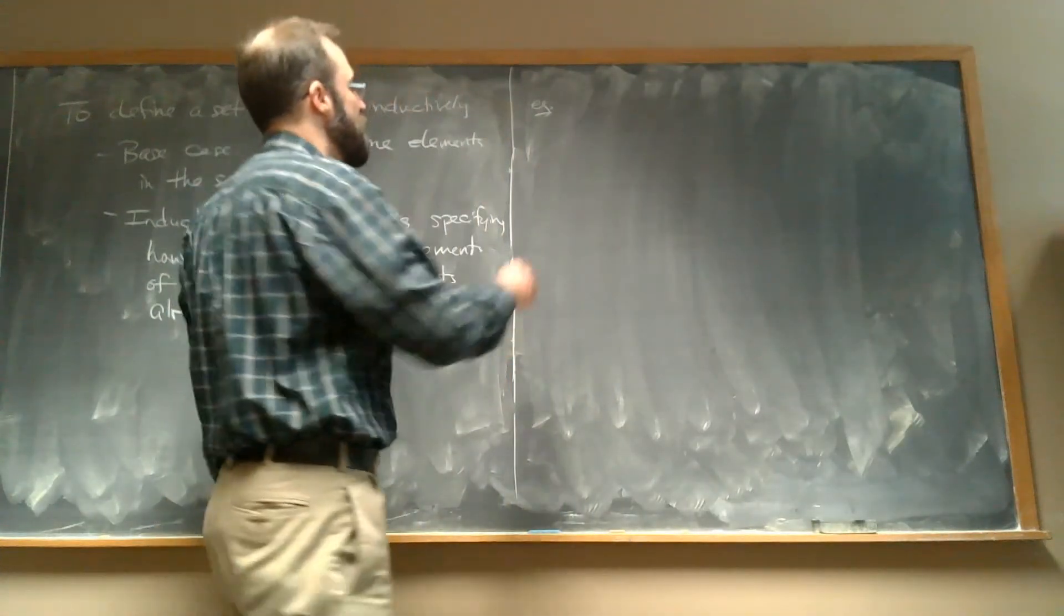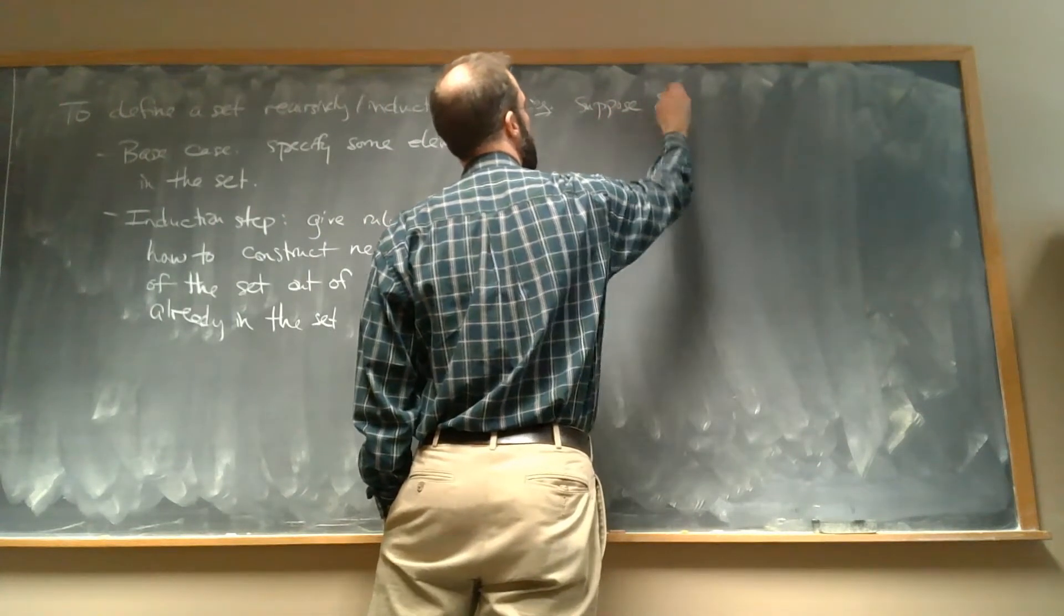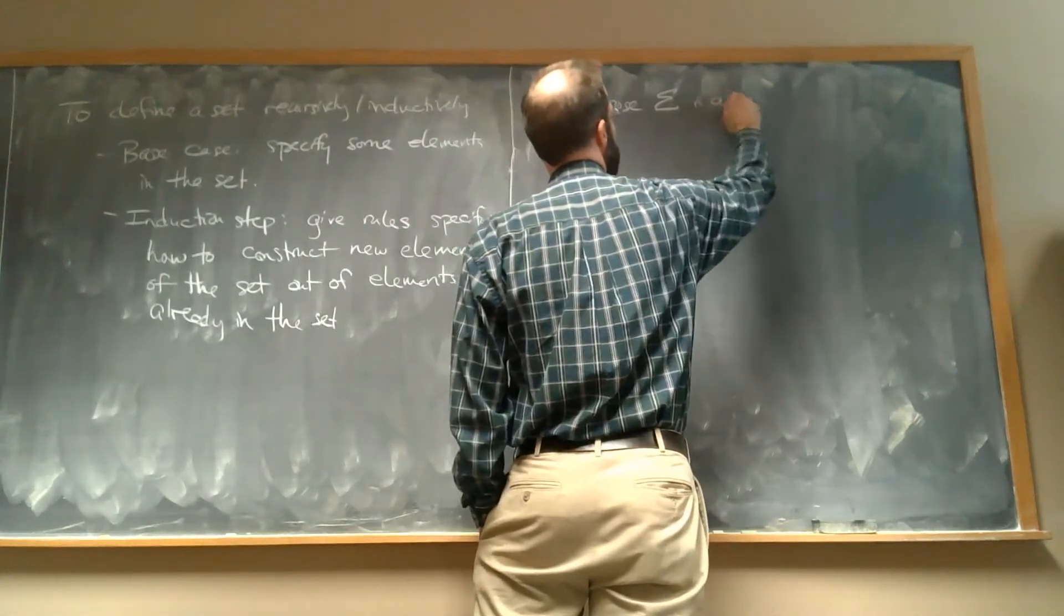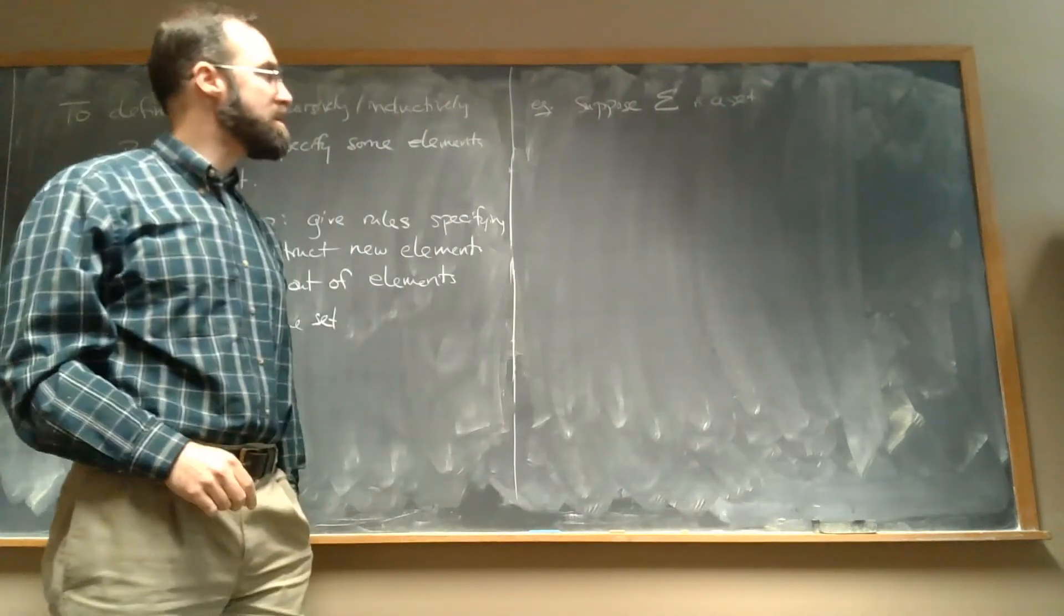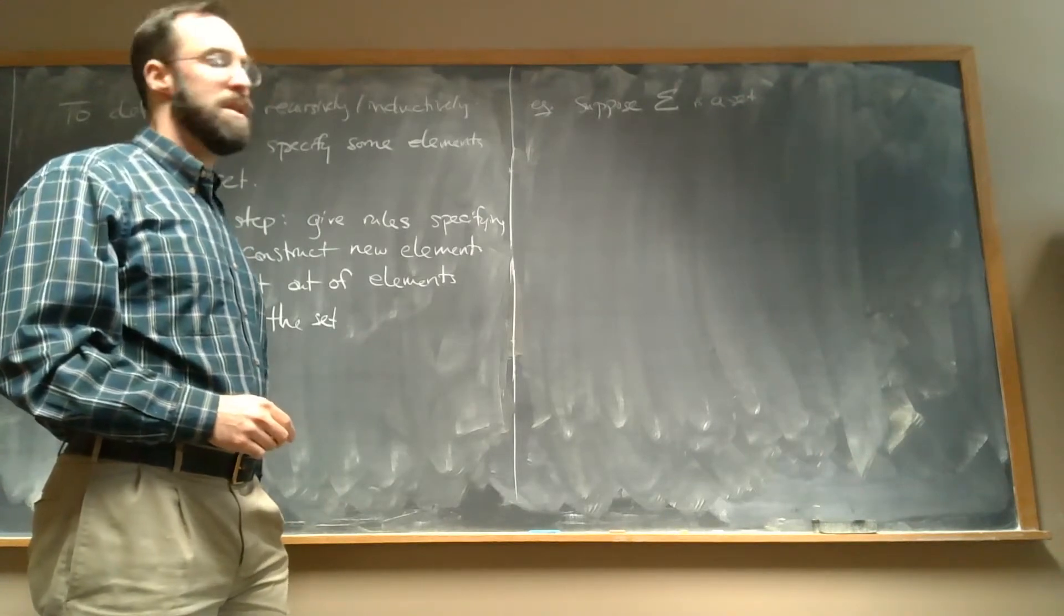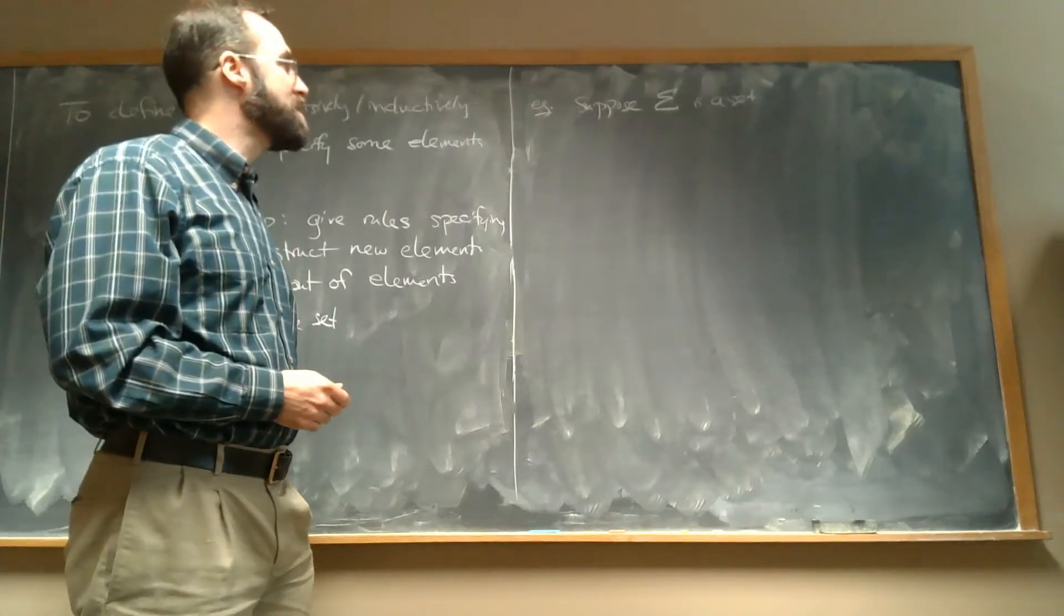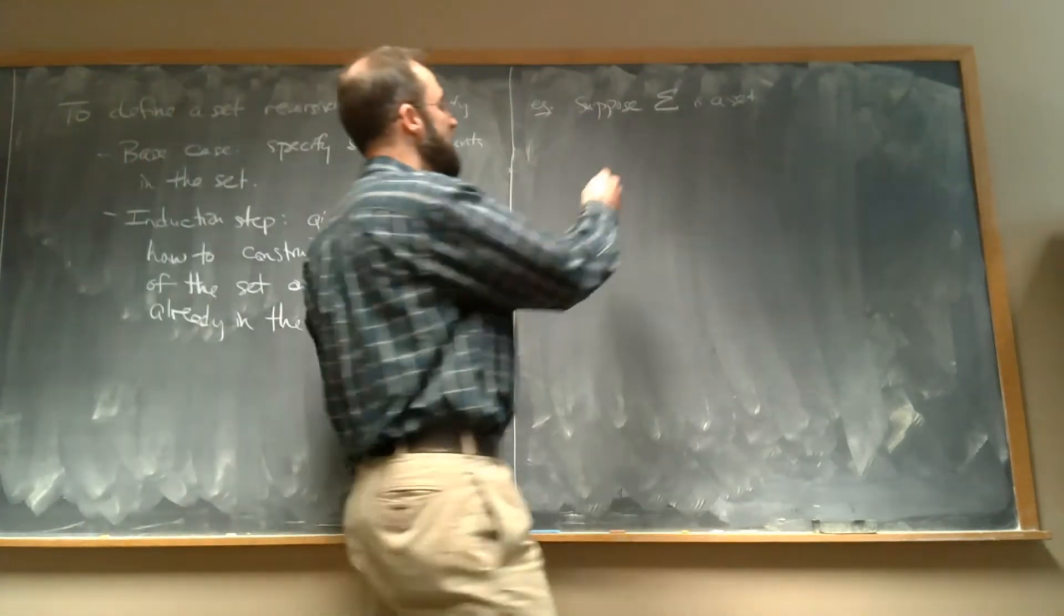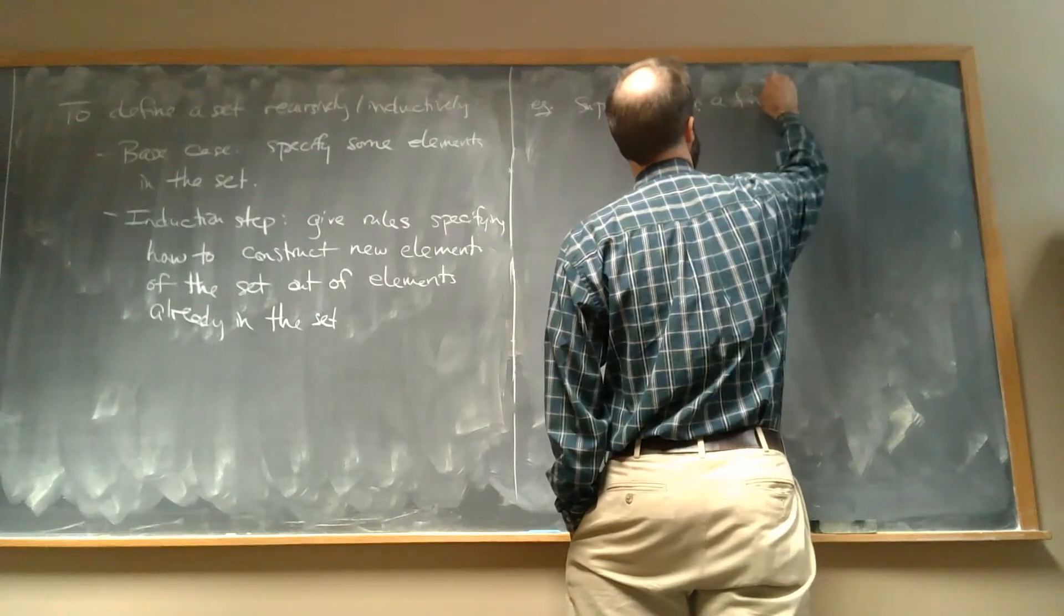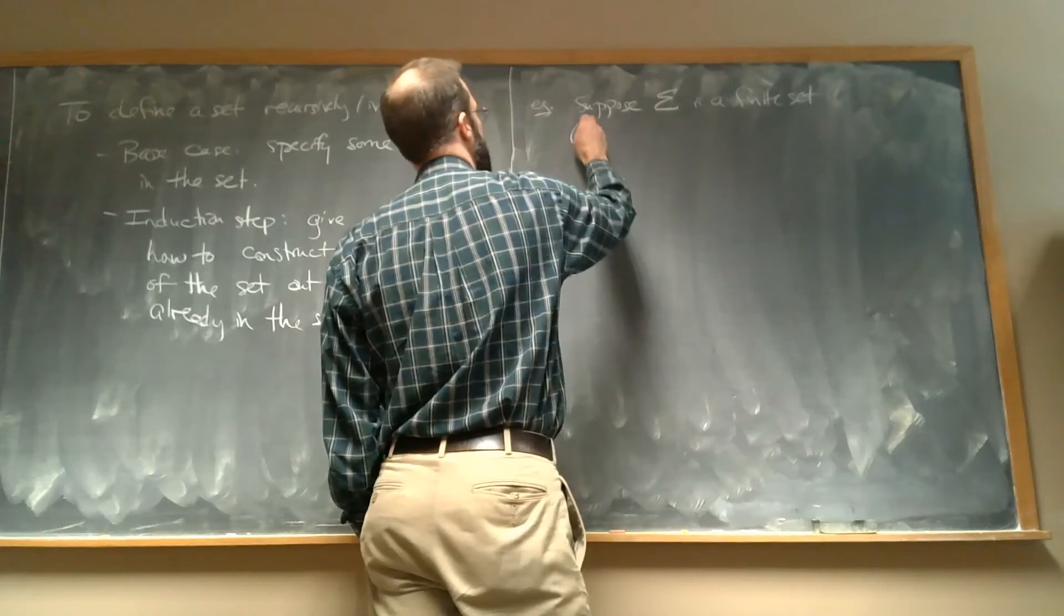So, first example is, suppose this is a Greek capital letter sigma. Sigma is not the kind of sigma that means a sum, we're just using it as a letter. It's pretty typical to use a capital sigma for this. So, suppose sigma is a set, a finite set.